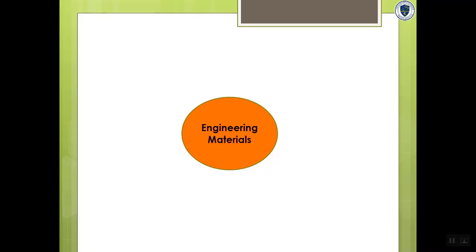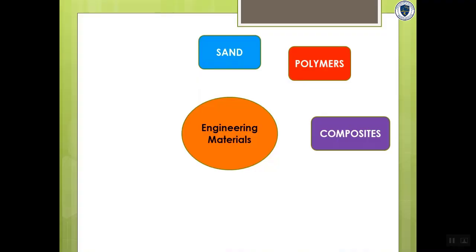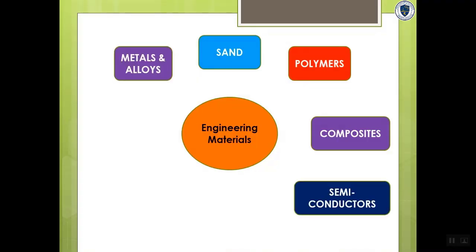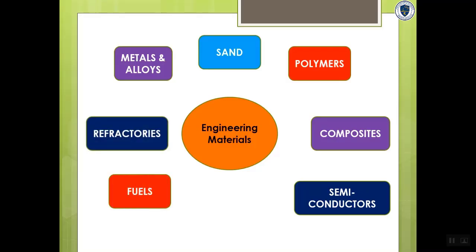Here are few Engineering materials which we use in industries. They are Sand, Polymers, otherwise called Plastics, Composite Materials, Semiconductors, Metals and Alloys, Refractories, Fuels and Nanomaterials.